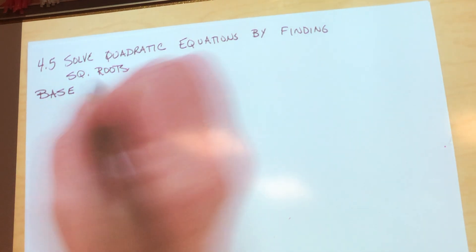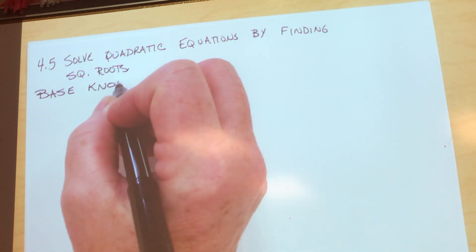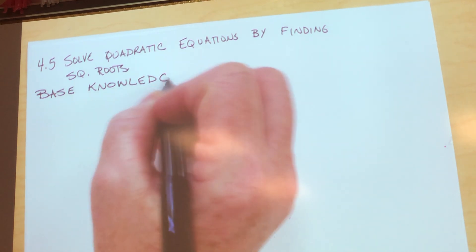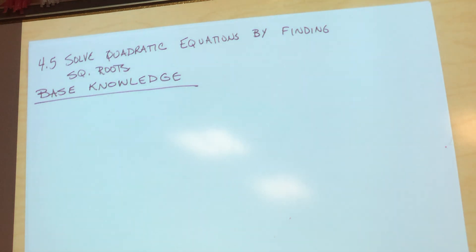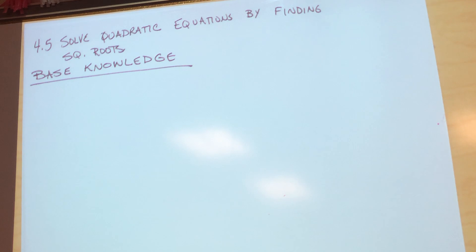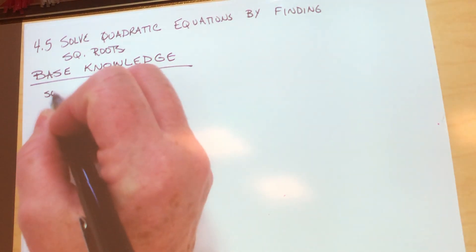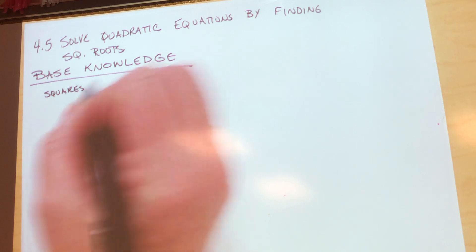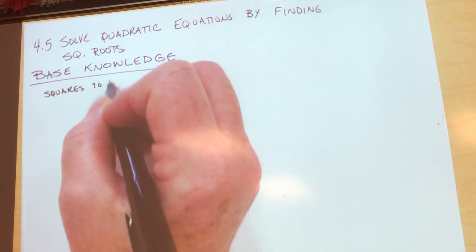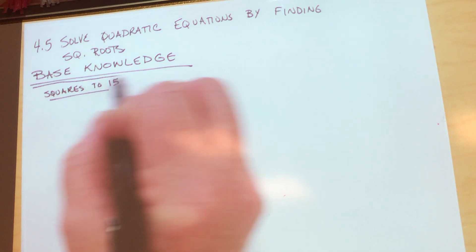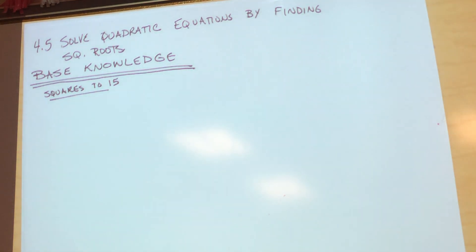Before we talk about that, I want to talk about what I consider base knowledge for you. This is stuff that I think you should already know. If you don't already know, I'm telling you — you better know now. You better learn it in the next couple of days. So you need to be able to list the perfect squares up to 15. We're going to do it out loud. Everybody's going to say them — we're all participating.